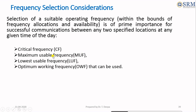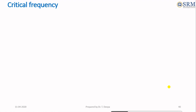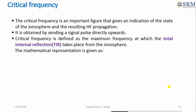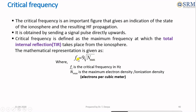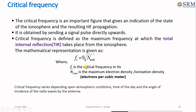The frequencies are critical frequency, maximum usable frequency, lowest usable frequency, and optimum working frequency. The critical frequency is used to indicate the state of ionosphere. It is the highest frequency at which total internal reflection takes place from the ionosphere. The mathematical representation is: fc = 9√(nmax), where fc is the critical frequency measured in hertz, and nmax is the maximum electron density, called ionization density, measured in electrons per cubic meter. This critical frequency varies depending on the atmospheric conditions and the angle of incidence of radio waves, so the fc value changes per time of the day.